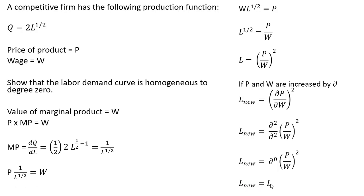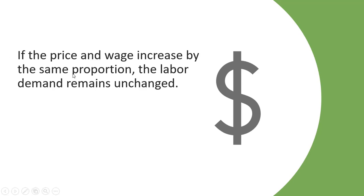So in other words, if we're to double the price and if we're to double the wage, the firm would continue hiring the same number of workers. So to sum up, if the price and wage increase by the same proportion, the labor demand remains unchanged, homogeneous to degree zero. I hope you found this video helpful.